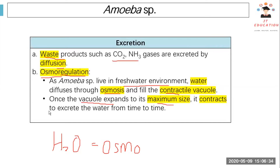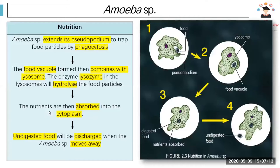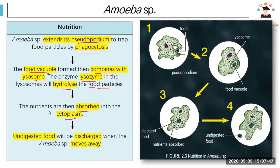When the vacuole expands to its maximum size, amoeba contracts it and excretes the water out from time to time so it won't burst. For nutrition, amoeba uses its pseudopodia to trap food by a process called phagocytosis. After phagocytosis, a food vacuole forms and combines with lysosomes. The enzyme lysozyme hydrolyzes the food, breaking down food particles into nutrients that are absorbed into the cytoplasm. Undigested food is discharged when the amoeba moves away.